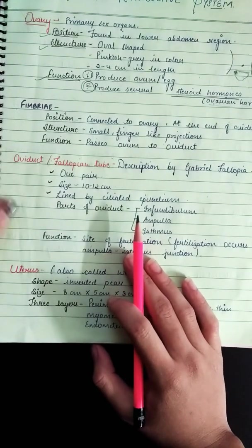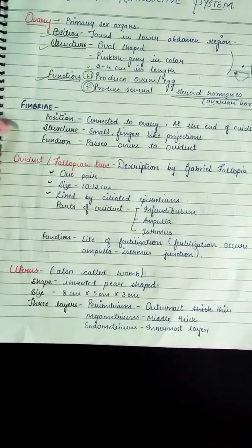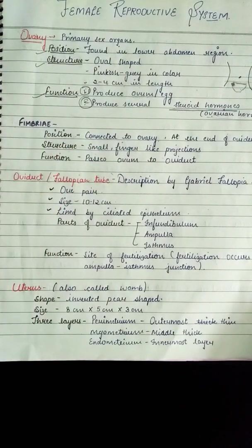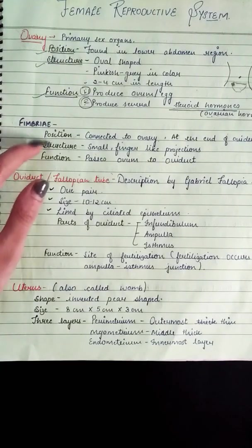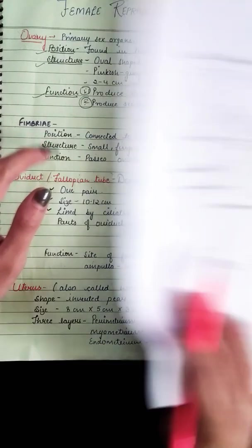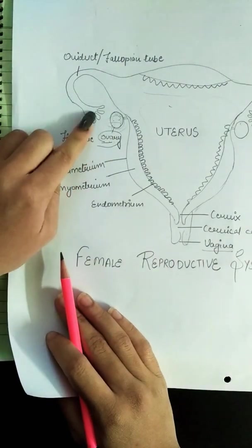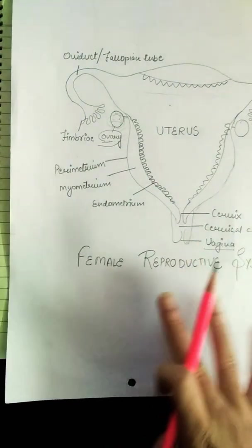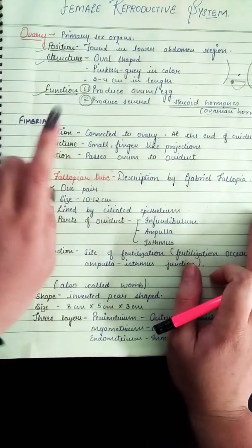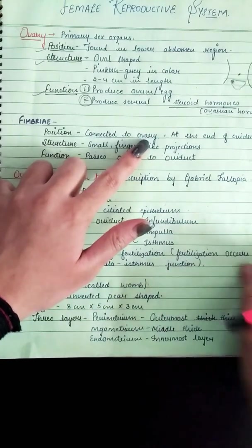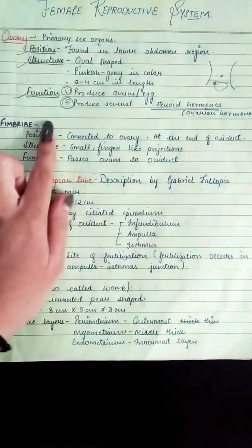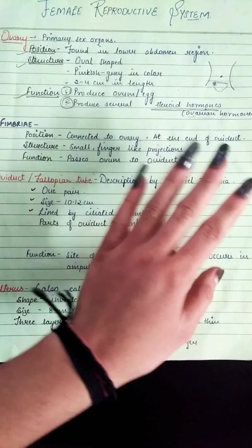Next is the fimbriae. Fimbriae are generally not counted when we list the main parts of the female reproductive system, but they are very important. The fimbriae are connected to the ovary — the ovary is connected to the fimbriae at the end of the oviduct.